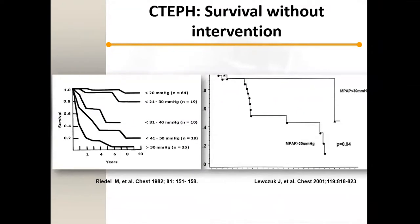A study from 2001 looked at two populations — 54 total patients. Four patients were offered pulmonary thromboendarterectomy surgery and the rest were followed medically. You can see how drastically survival is influenced by doing pulmonary thromboendarterectomy surgery versus just leaving the patient on medical therapy. So we have a good solution.